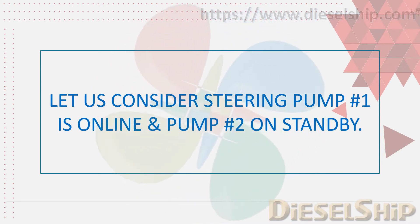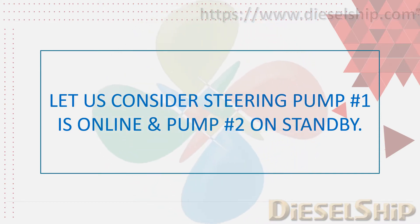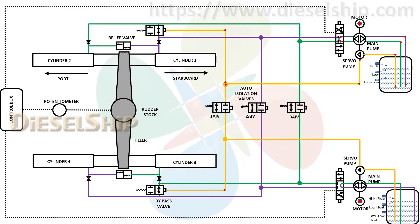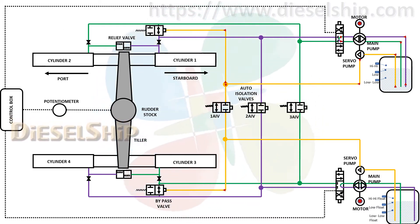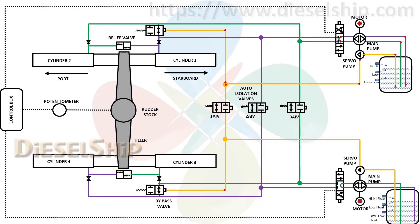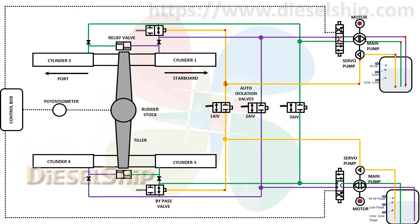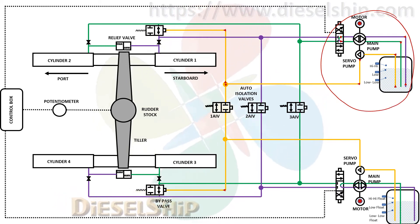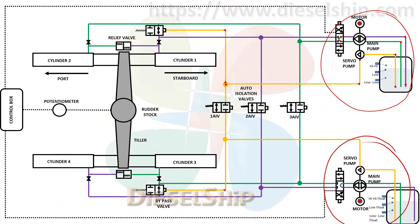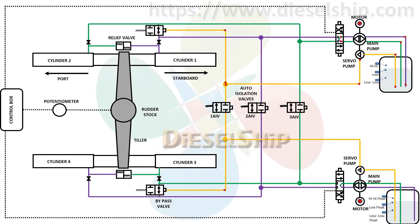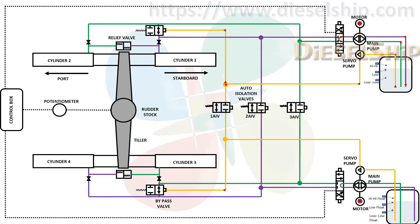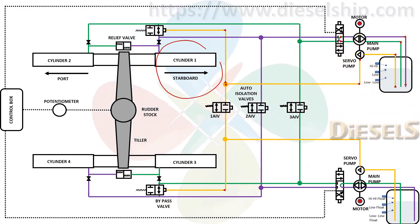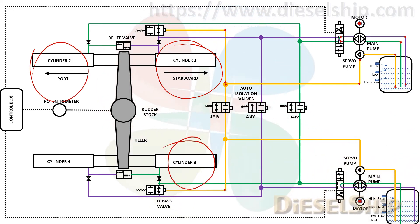Let us assume steering unit number one is online and unit number two is on standby. Here on the screen you see the schematic drawing of a four-ram electro-hydraulic steering gear incorporating two distinct power units, as required per SOLAS. This is number one unit and this one here is number two unit. As the name implies, there are four rams incorporated into these cylinders — one, two, three, and four.